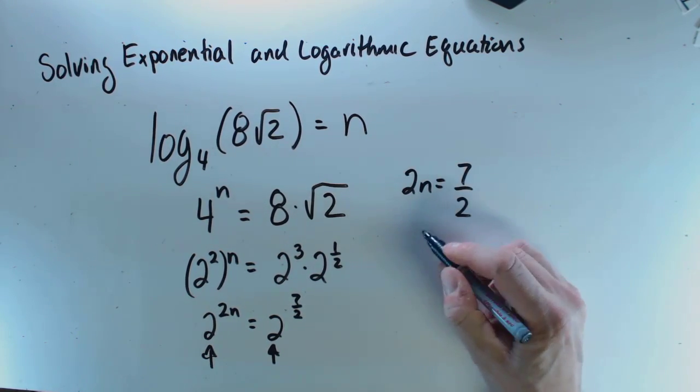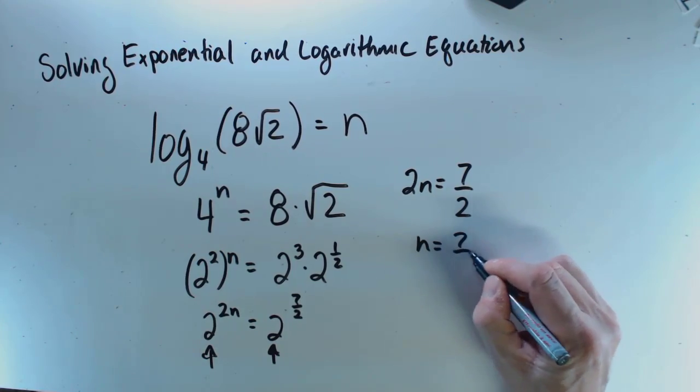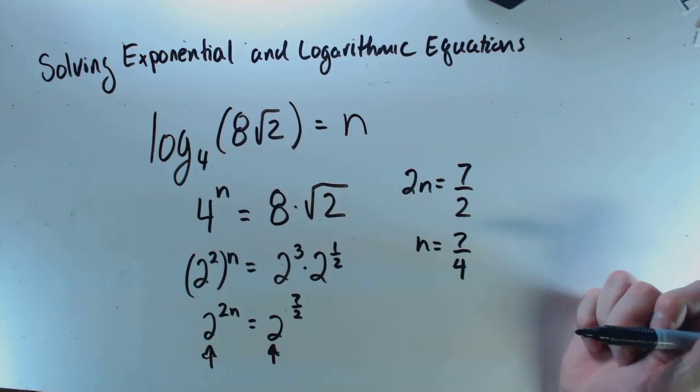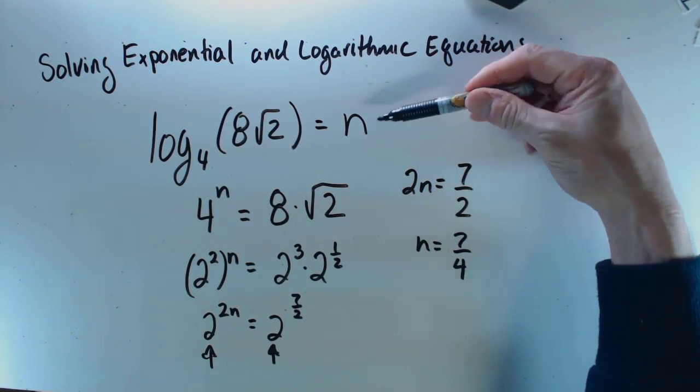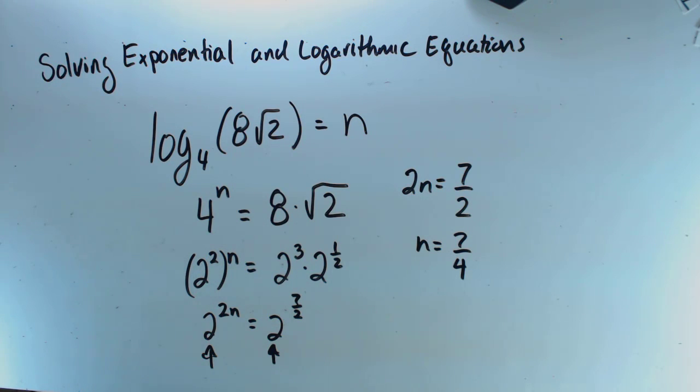Equals 7 halves, and so n is equal to 7 quarters. Okay, I had to do this kind of counterintuitive thing with the n, but it's all good. I made it go away.